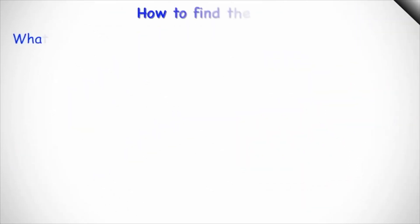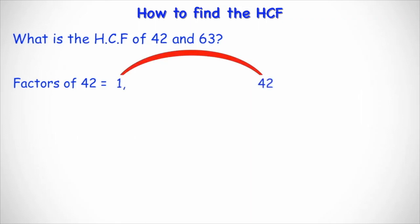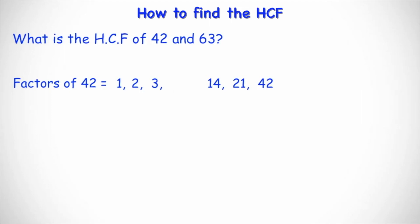Let's take a look at another example. Say we wanted to find the highest common factor of 42 and 63. First we list all the factors of 42 using what I call the rainbow method. We start with 1 and its partner 42. Can 2 go into 42? Yes — 2 times 21 equals 42. Can 3 go into 42? Yes — 42 divided by 3 gives us 14, because 3 times 14 equals 42. Can 4 go into 42? Not exactly, as it gives a decimal. Same applies to 5. Can 6 go into 42? Yes — 6 times 7 equals 42. And that's where the list ends.